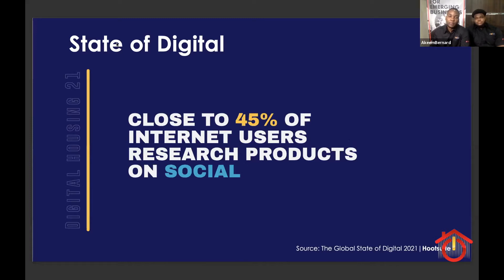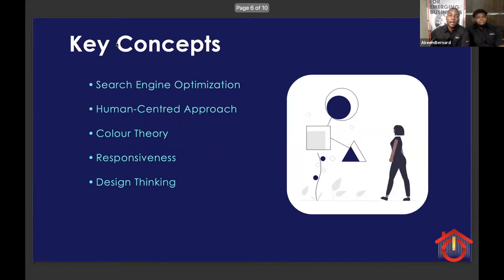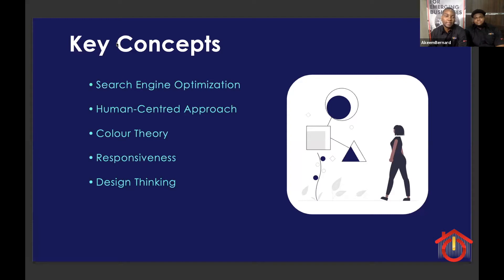Close to 45% of internet users research products they're thinking of purchasing on social media. Let's go through some key concepts. We have search engine optimization — SEO — which goes hand in hand with Google, the largest search provider for any search, whether product purchases or research. We have the human-centered approach where the audience is thought of first before any product or design is considered. We also have color theory, which goes hand in hand with the psychology of colors and how people relate to those colors in design.